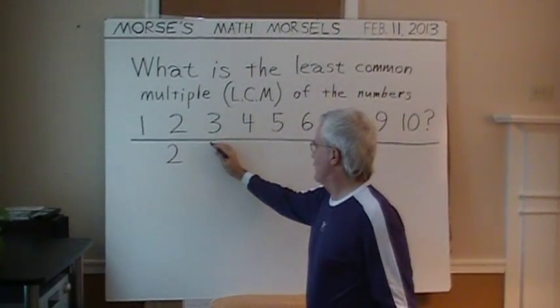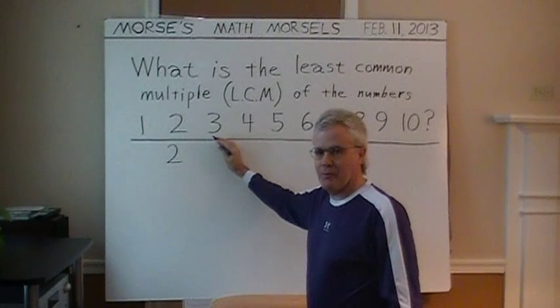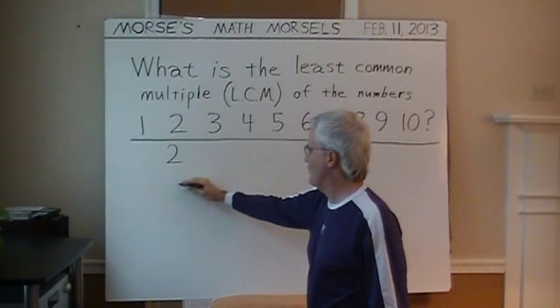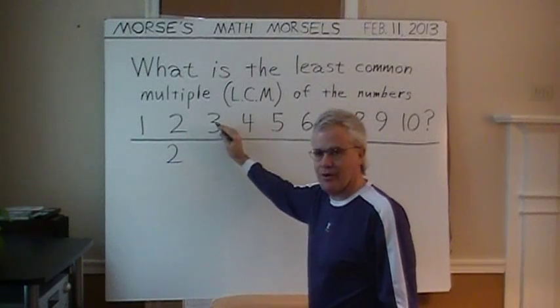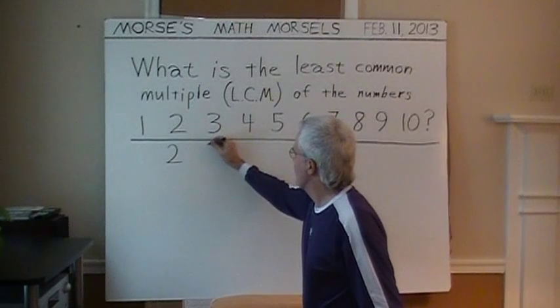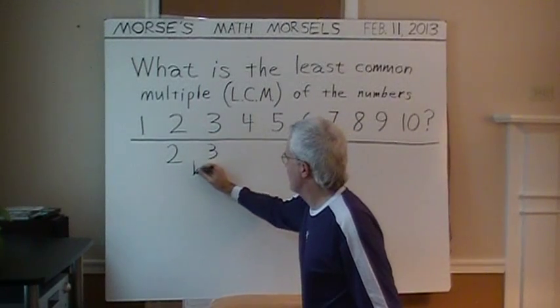How about 2 with 3? What's the least number that's in the times tables of 2 and 3? If you count by 2's, you'll reach 6. If you start at 3, add 3, you get 6 already. So, for 2 and 3, we have 6 so far.